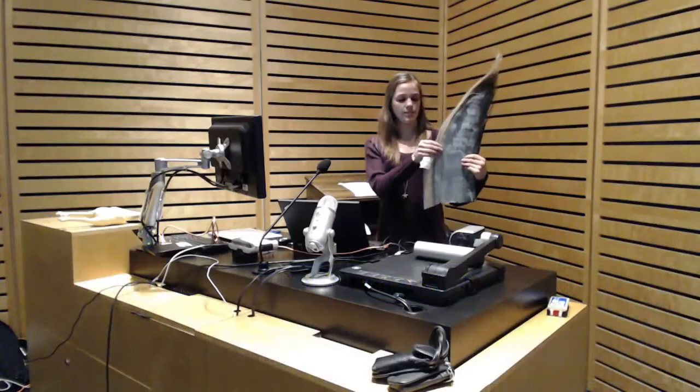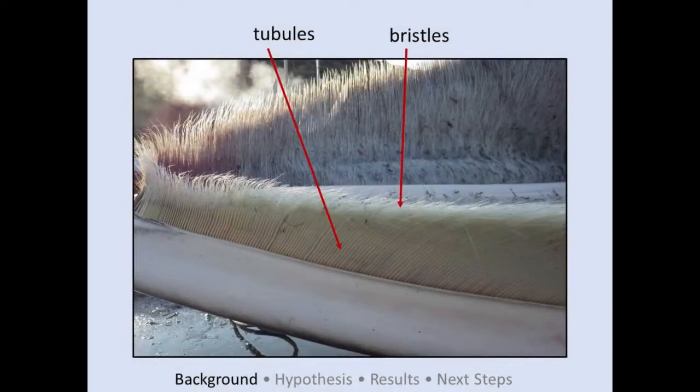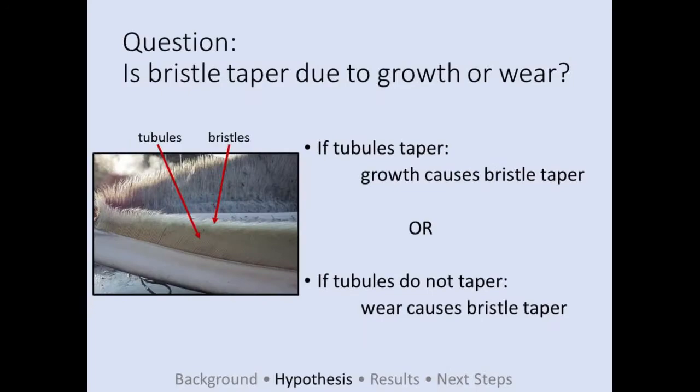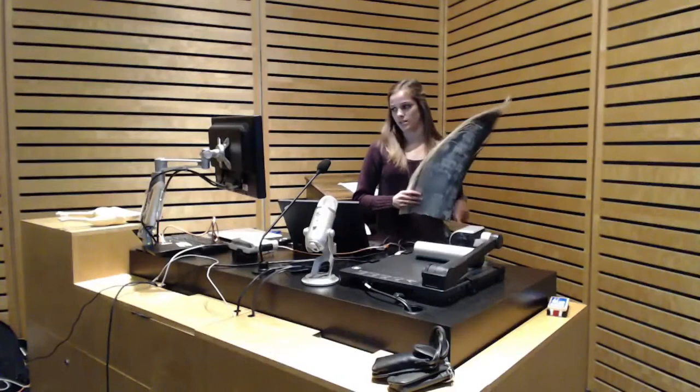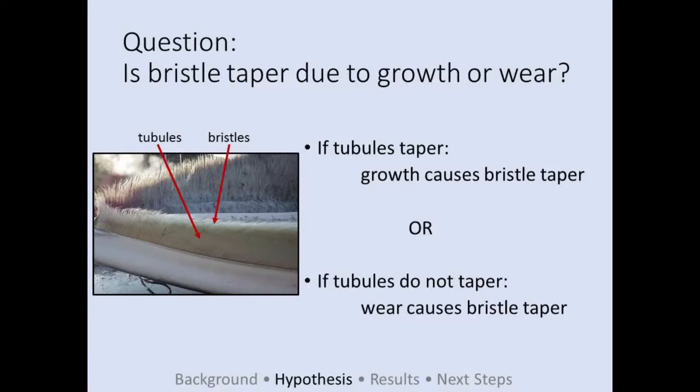Not a whole lot is known about bristles and how they relate to the filtration process in general. But one observation I'm basing my study on is that they taper. We don't know why, but I'm using this observation as an opportunity to learn about their growth. There are two hypotheses I'm differentiating between. The first is that if tubules taper, then the taper of the bristles is a result of their growth — something they have throughout their whole life.